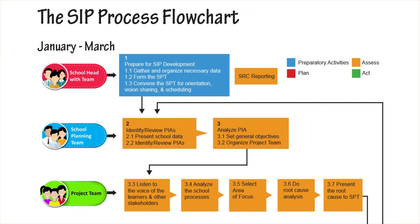This is the SIP process flowchart. From January to March, the school head with the team prepares for SIP development, gathers and organizes necessary data, forms the SPT, and convenes the SPT for orientation, vision sharing, and scheduling. After doing all the preparatory activities, we identify the PIAs — priority improvement areas — present school data, identify and review those priority improvement areas, and analyze them by setting general objectives and organizing the project team. We then listen to the voice of the learners and other stakeholders, analyze school processes to identify the storm clouds, which become our area of focus.